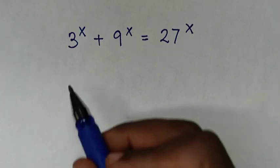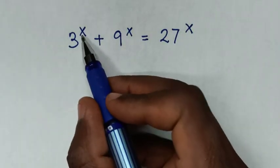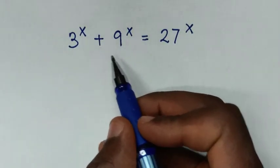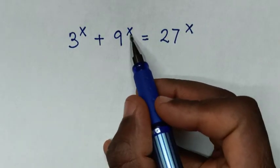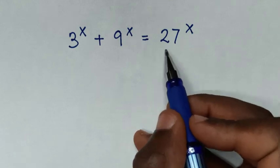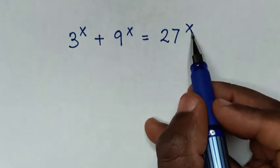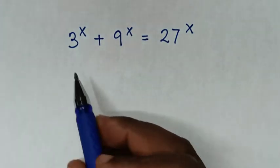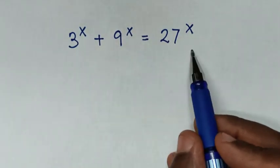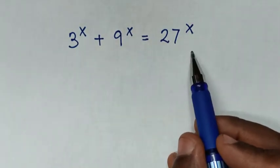Hello. How to solve 3 power x plus 9 power x is equal to 27 power x, to find the value of x from this equation.